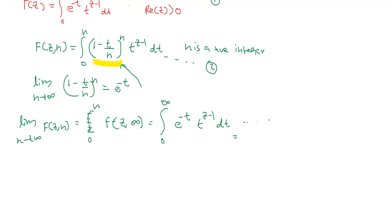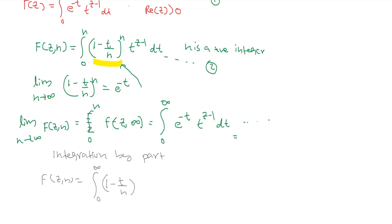Now we will evaluate f(z, n) by integration by parts. We know that f(z, n) is equal to the integral from 0 to n of (1 minus t over n) raised to n, times t raised to z minus 1, dt.